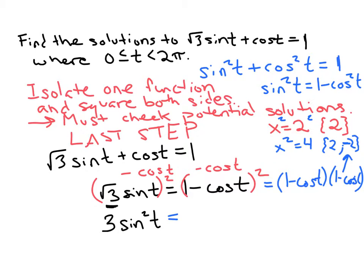So we should FOIL that, multiply it out. First, 1 times 1 gives me 1. Outside, 1 times -cos(t), so that's -cos(t). And then inside gives me -cos(t). So if I put those together, that would be -2cos(t). And then last, -cos(t) times -cos(t) gives me positive cos²t.